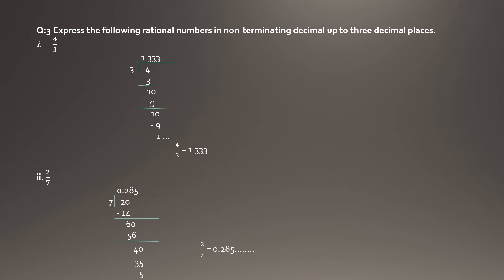For non-terminating decimals, we solve up to three decimal places. Three decimal places means we find only three digits after the point. After solving, if the remainder repeats, the decimal is recurring; if it does not repeat, it is non-recurring non-terminating.